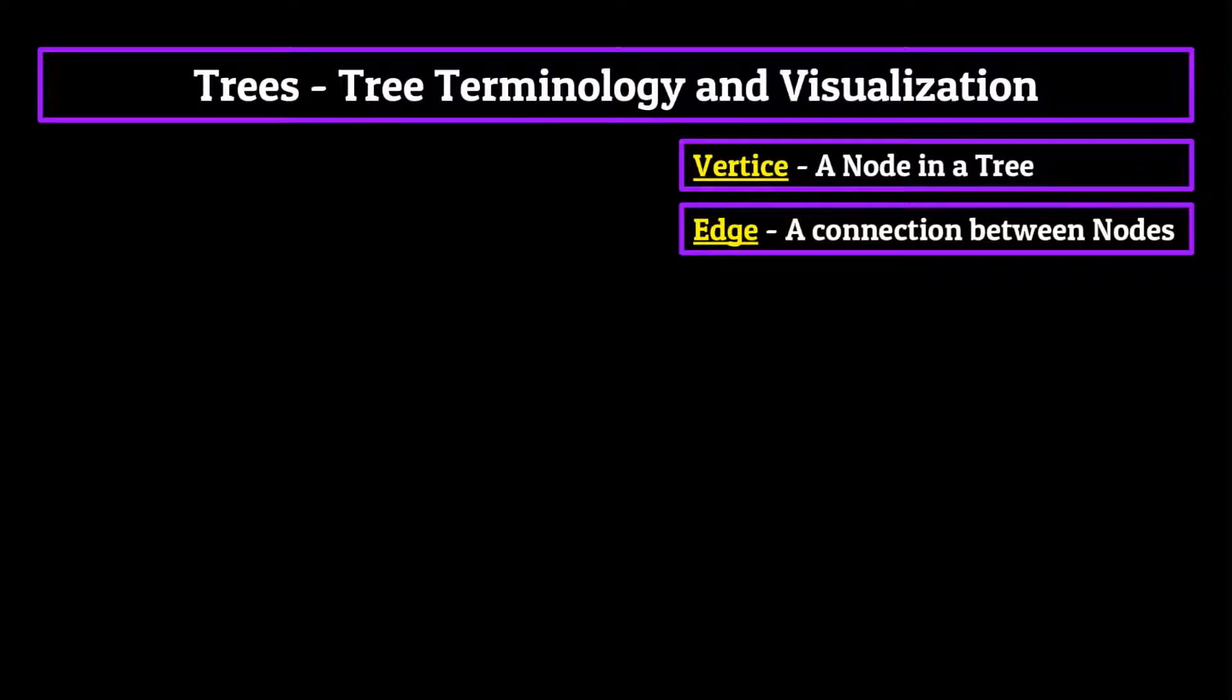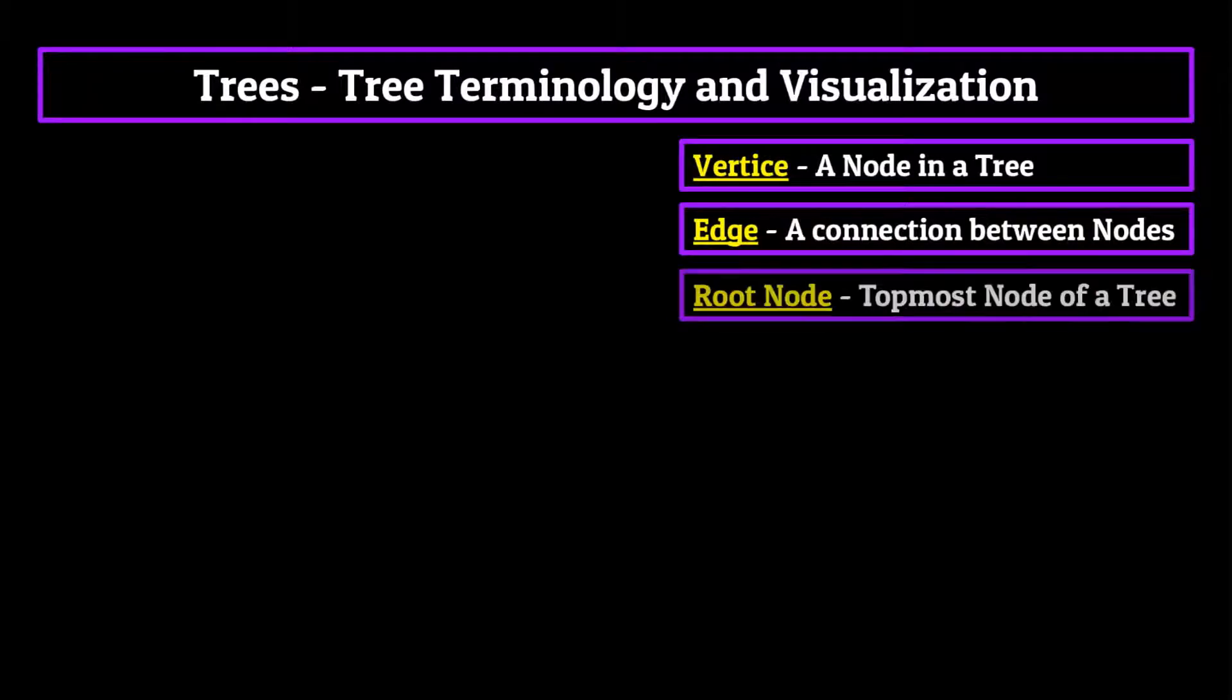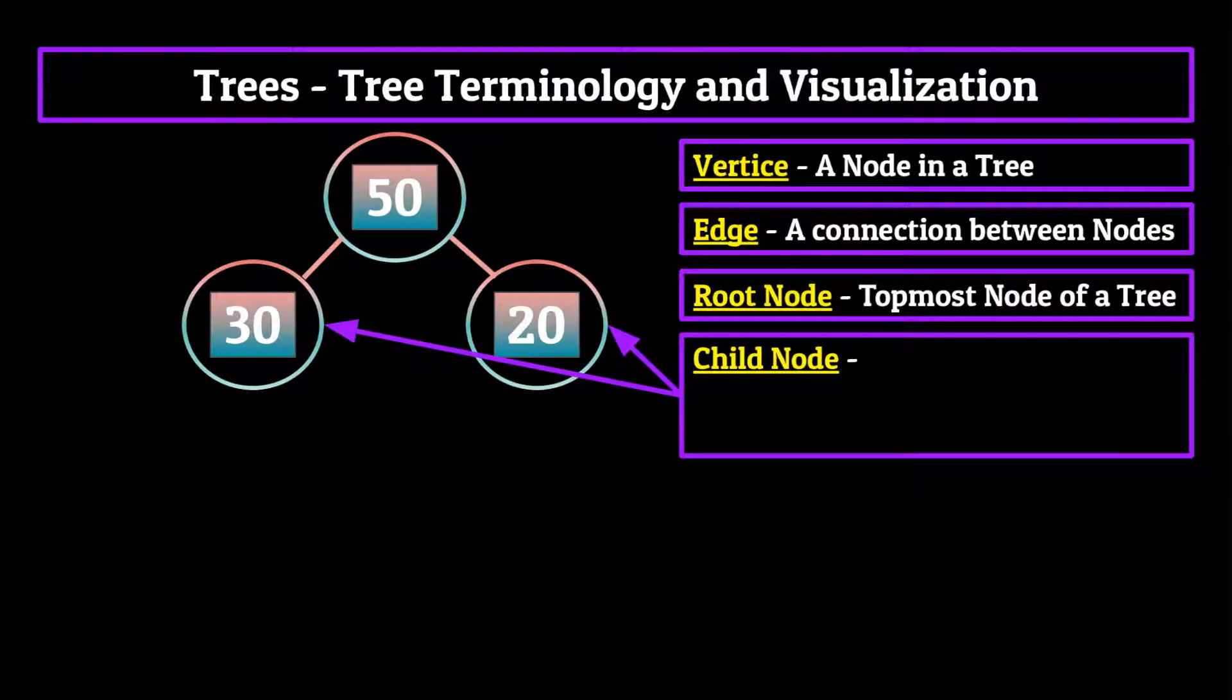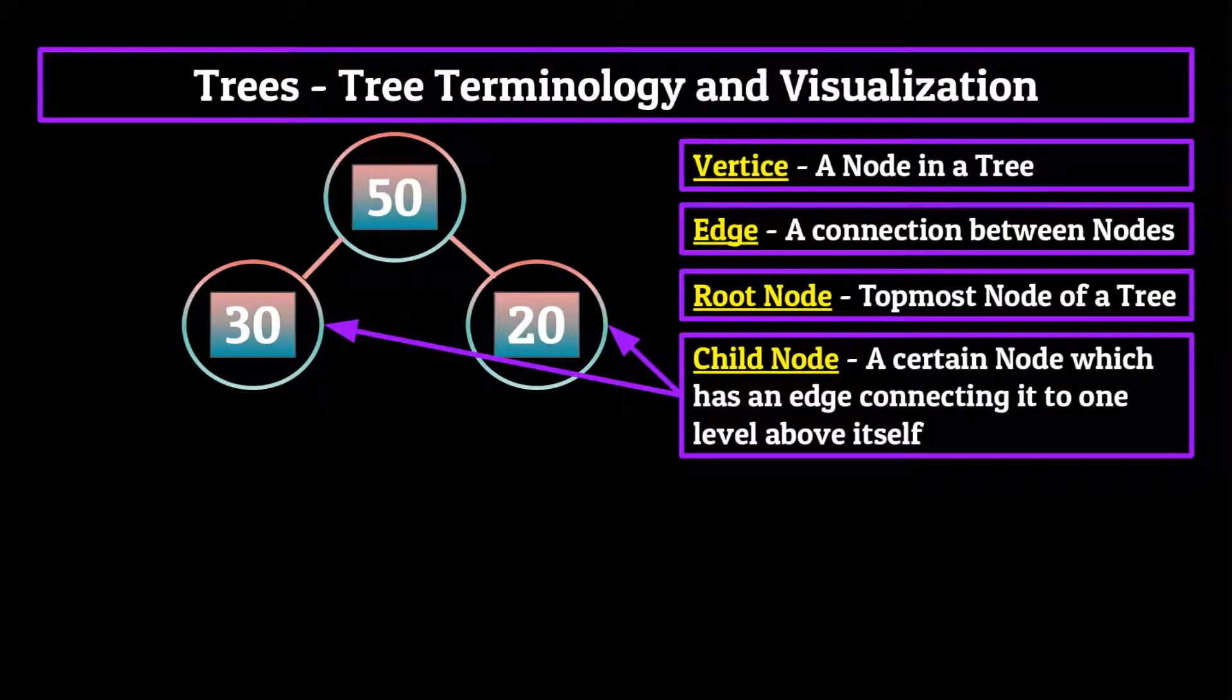The first new thing is that every tree starts with what's known as a root node. This is always going to be the topmost node of a tree. Let's add a node with the integer 50 to serve as our root node. Next up, let's connect two vertices to our root node using two edges. These two nodes that we just added are what's known as child nodes, since they are both connected to the node containing the integer 50. Child nodes can then be defined as a certain node which has an edge connecting it to one level above itself.